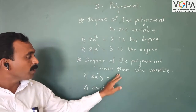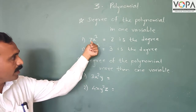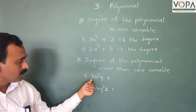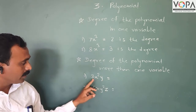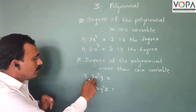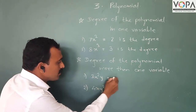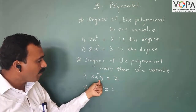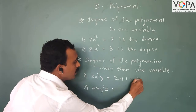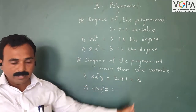Now for the degree of a polynomial with more than one variable: when there are two variables, the degree is the sum of the indices of each variable. For example, in 3x²y, x has index 2 and y has index 1. Therefore 2 plus 1 equals 3, so the degree of this polynomial is 3.